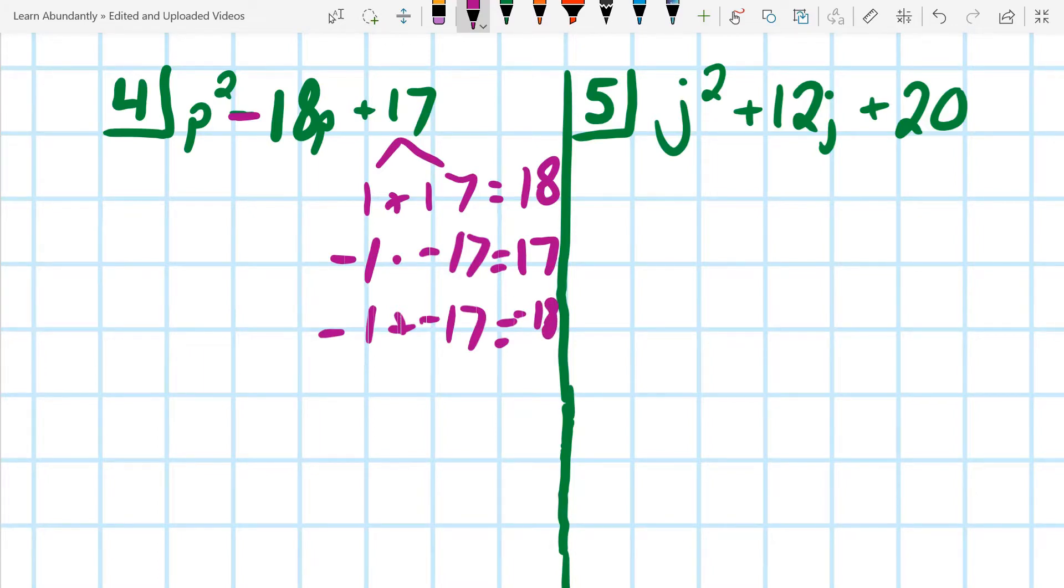And negative 1 plus negative 17 equals negative 18. So our two numbers are actually both negative because they multiply to a positive, so they cancel out, but they still add to a negative. So our answer is going to end up being P minus 1 and P minus 17 because they're both negative.